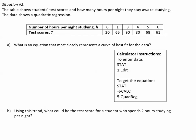Let's read situation number two. The table shows students' test scores and how many hours per night they stay awake studying. The data shows a quadratic regression. Number of hours per night studying. Notice as the hours per night studying go up, the test scores start low, but then they increase, but then they start to decrease.